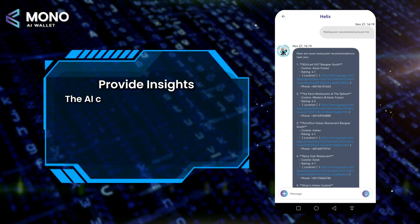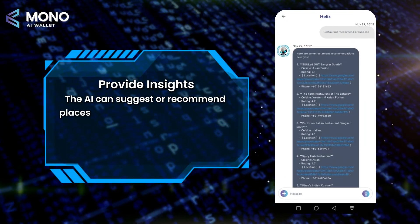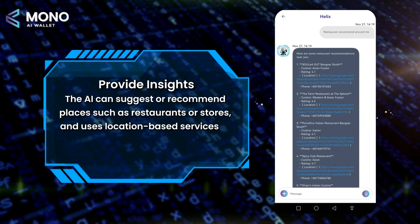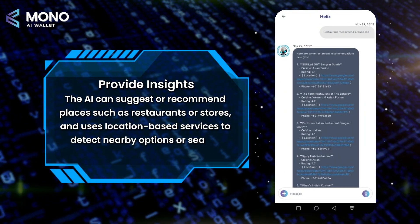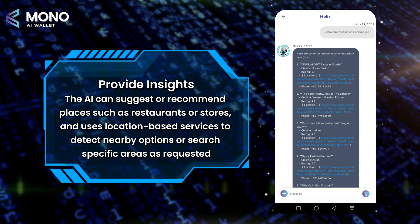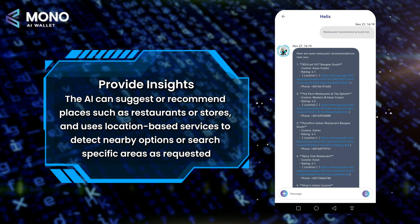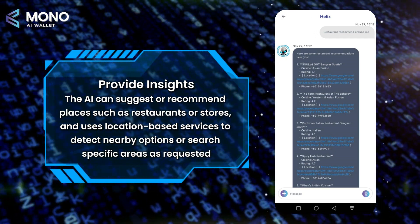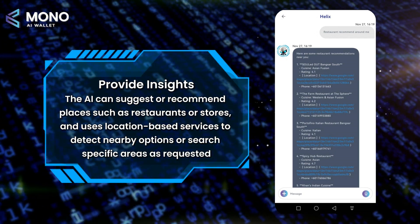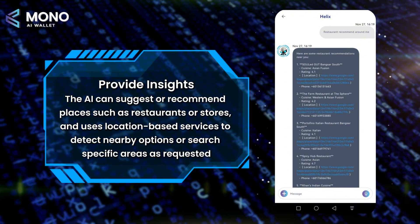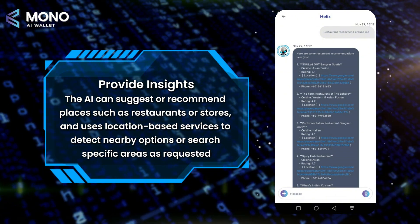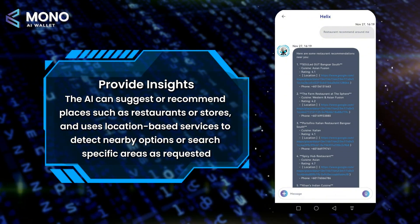Next, AI Assistant Helix can provide insights. The AI can suggest or recommend places such as restaurants or stores, and uses location-based services to detect nearby options or search specific areas as requested.